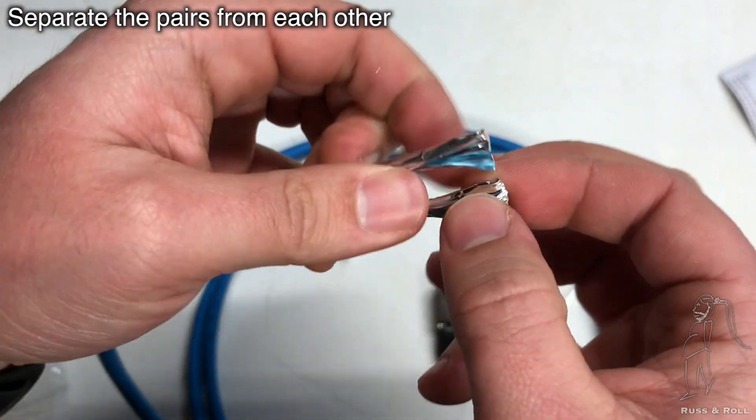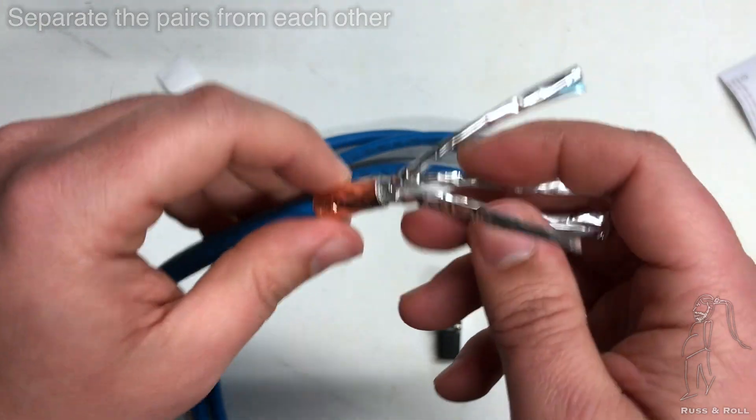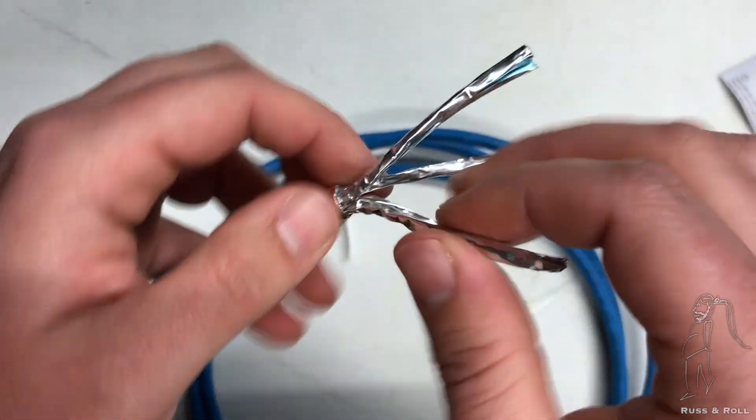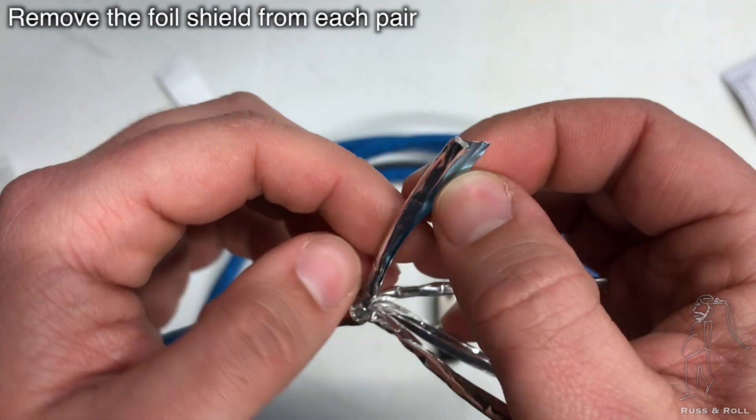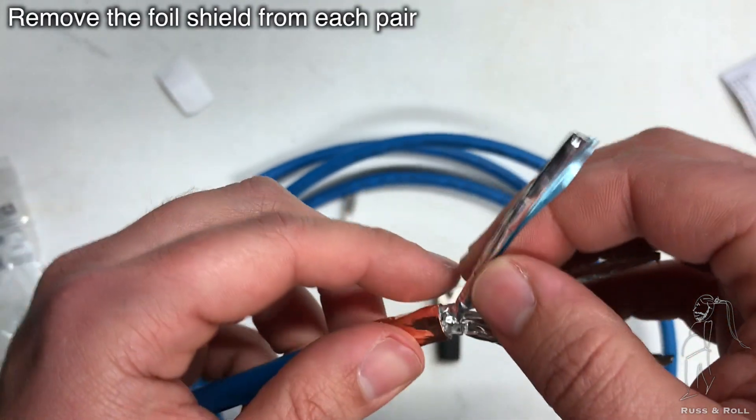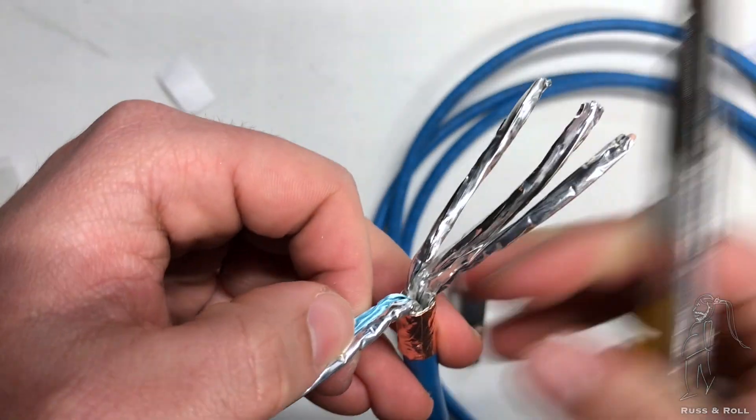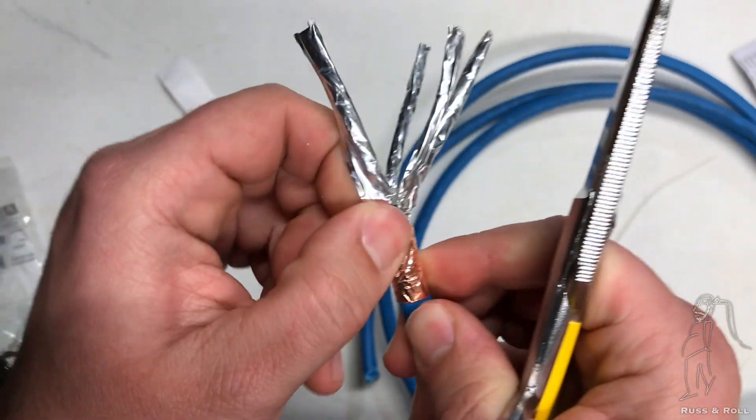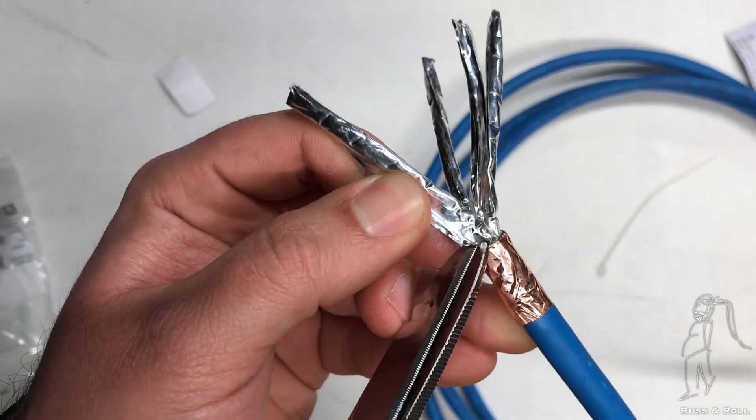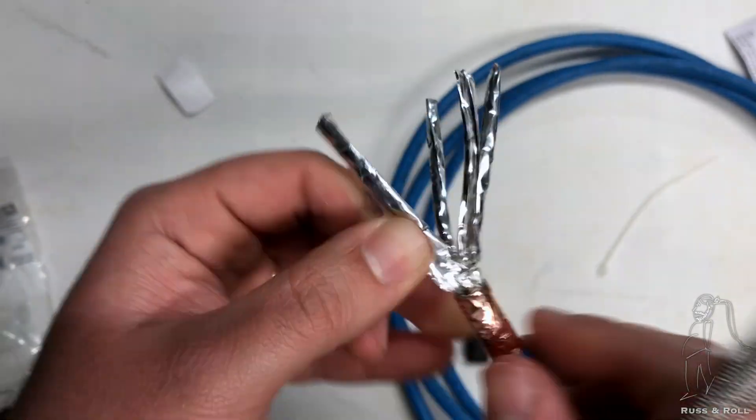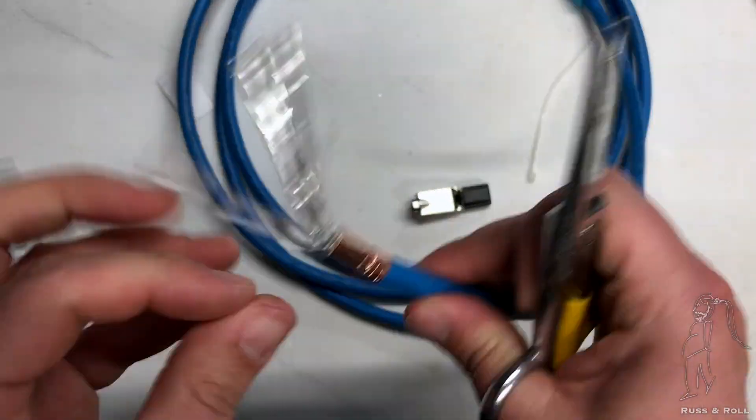Once that's done, you have to separate each of the pairs. We're doing this so that we can get at the individual foil wrapping that's around each pair because that has got to go. Once you get a pair by itself, you can start peeling back the foil to try to open it up so that you can snip it off. You want to make the cut as close to the jacket as you can. You only need to nick the edge of it because it's foil. Once you nick it, it'll be really easy to tear it. You don't actually have to cut it all the way off.